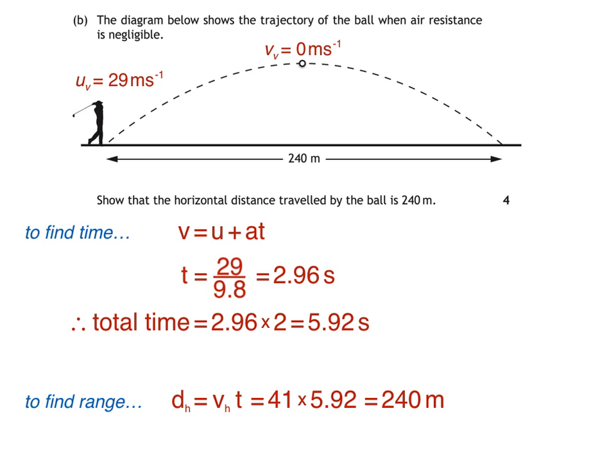Remember, the projectile's horizontal velocity is constant, unlike the vertical component. And in this case, we were able to work out the time of flight by finding the time to maximum height, and then multiplying by 2. This isn't always possible.